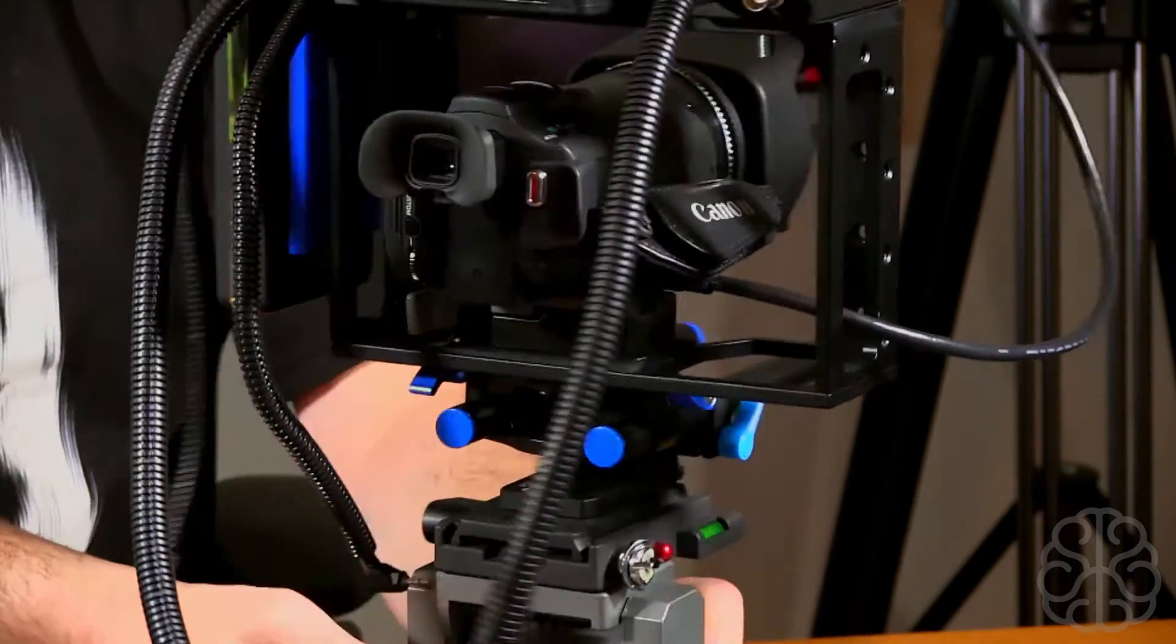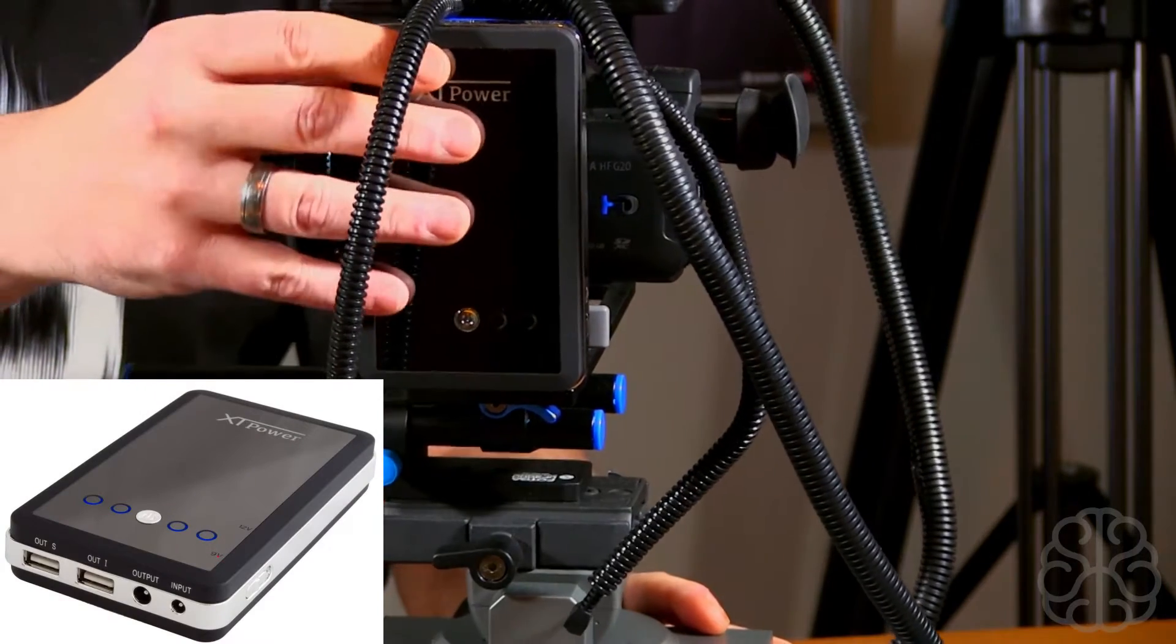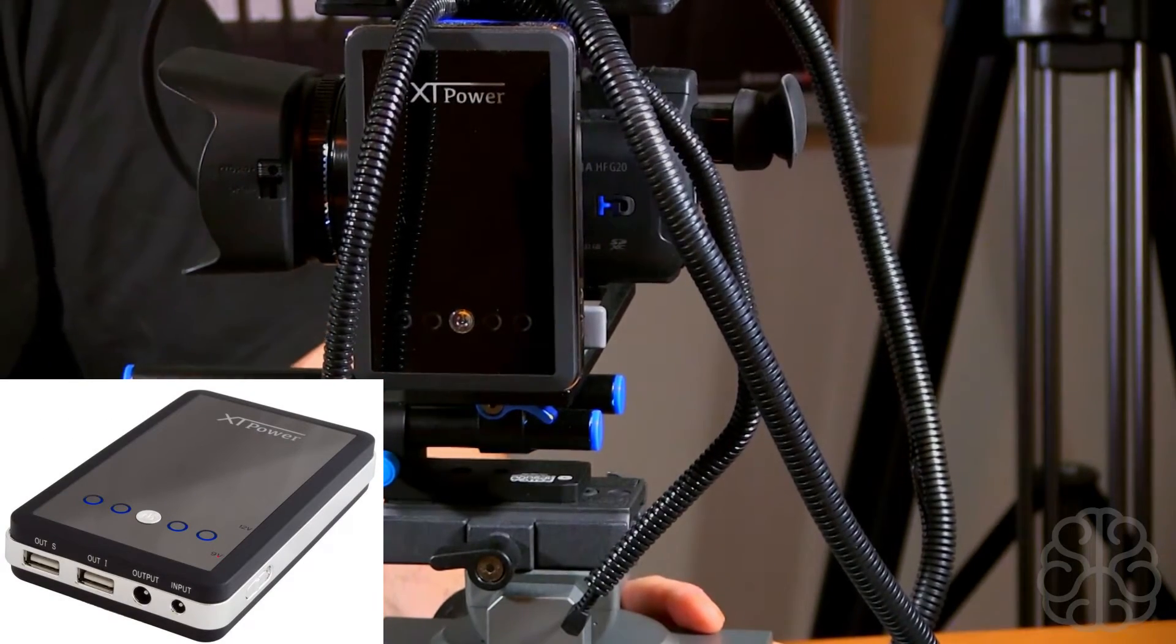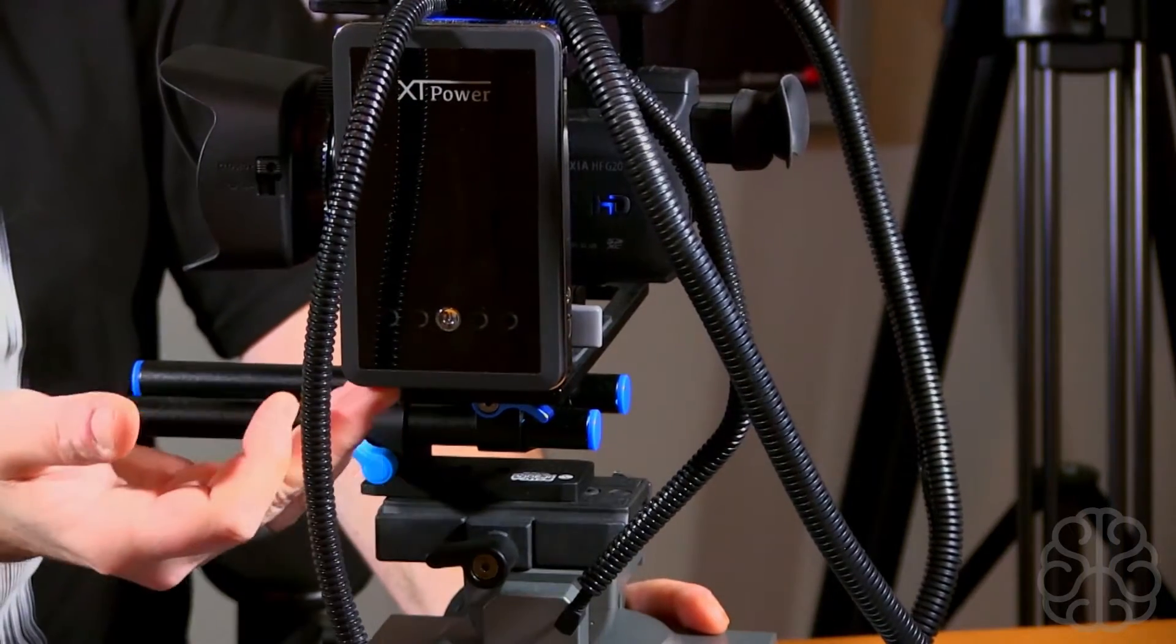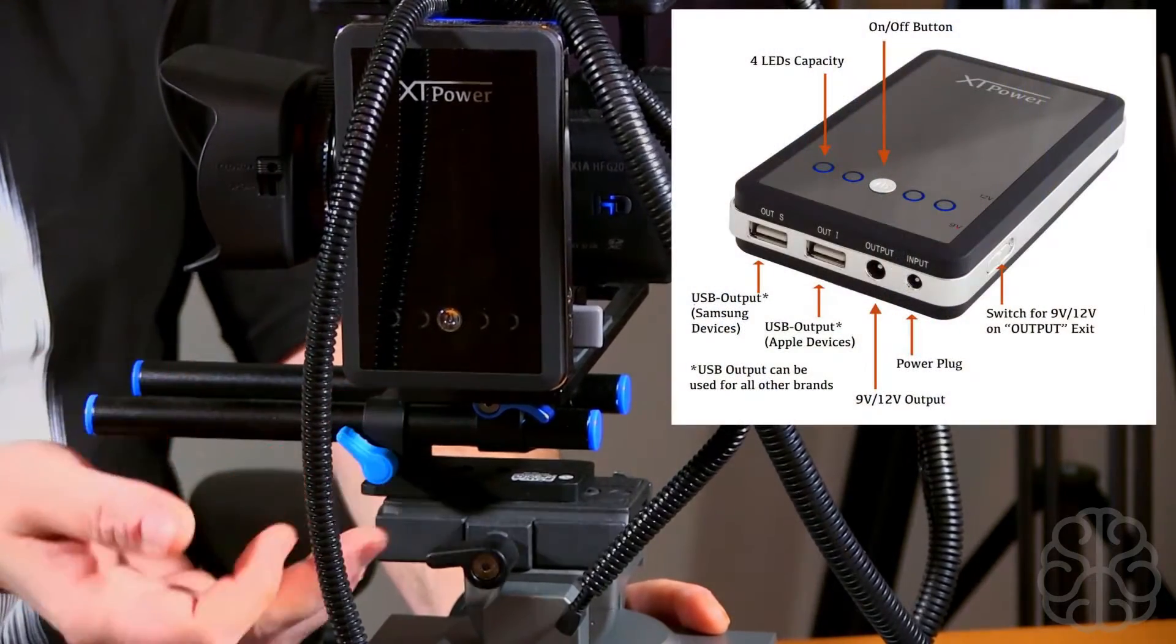I'm powering most of this stuff from this battery here, an XT Power. I think it's a 10,000 milliamp battery. What's cool about this battery is that it has two USB outs up to two amps, but it also has a little DC plug that you can select the voltage from 9 volt or 12 volts.